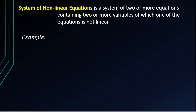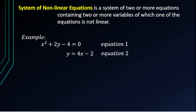For example, we have equation 1 and equation 2. Notice that equation 1 is an equation of a line because all terms are in degree one. Equation 2 is a nonlinear equation because it contains a term in degree two. So this is an example of a system of nonlinear equations because at least one equation is nonlinear.